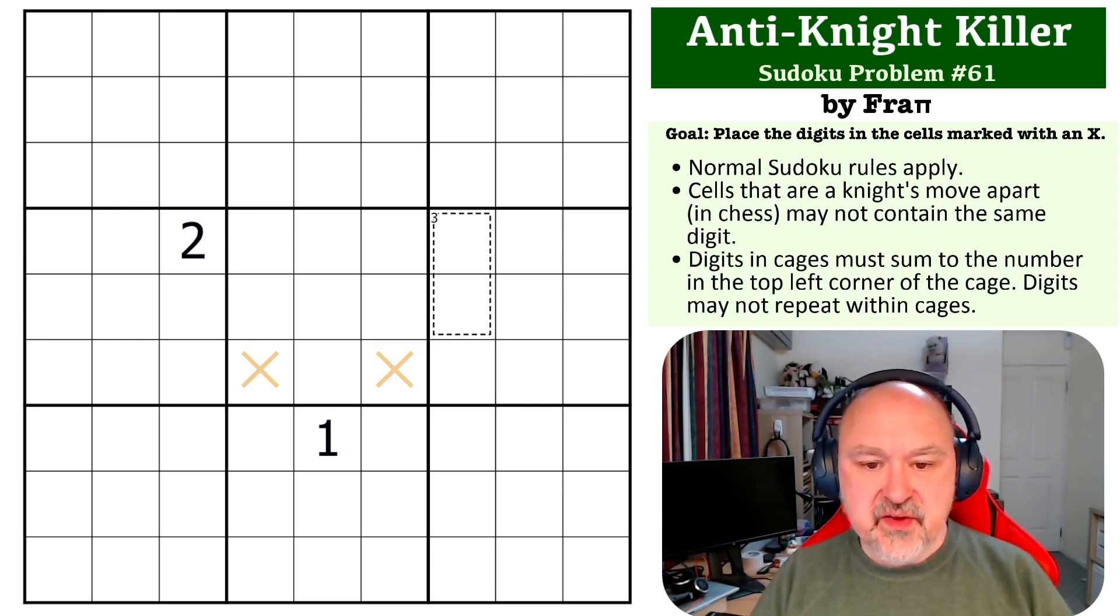With this one, the important things to remember is that digits that are a knight's move apart - so two cells in one direction and one in another - cannot contain the same digit, even if they don't see each other by normal Sudoku rules.